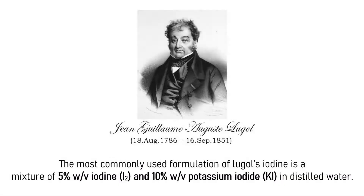Lugol's iodine was first made in 1829 by the French physician Jean-Guillaume-Auguste Lugol. The most commonly used formulation of Lugol's iodine is a mixture of 5% iodine and 10% potassium iodide in distilled water.